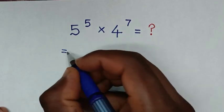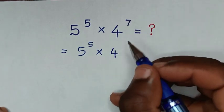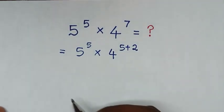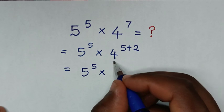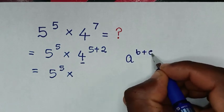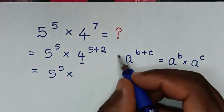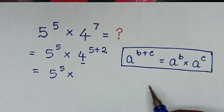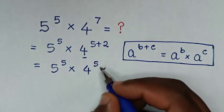It will be equal to 5 power 5 times 4 power 7. To have a common power of 5, we rewrite 7 as 5 plus 2. Then it will be equal to 5 power 5 times 4 power (5 plus 2). The expression 4 power (5 plus 2) is in the form of a power (b plus c), which equals a power b times a power c. So it becomes 4 power 5 times 4 power 2.